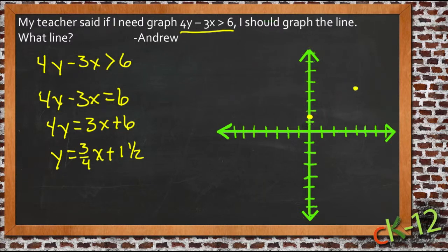Or it's rise negative 3, 1, 2, 3, run negative 4, 1, 2, 3, 4. So there's a point right over here.